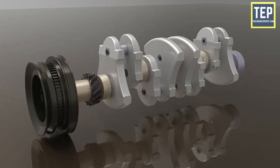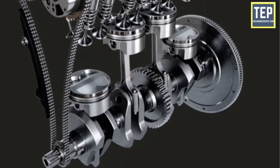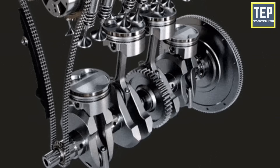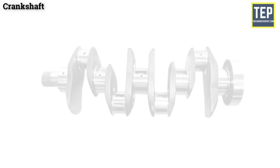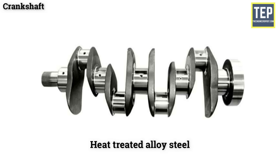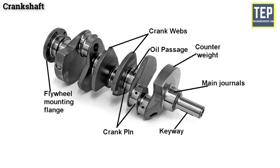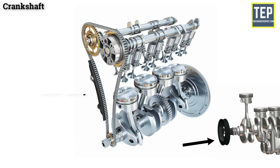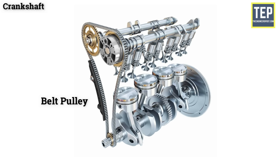The crankshaft is the engine component from which power is taken — the first part of the power transmission system, converting reciprocating motion of the piston into rotating motion via the connecting rod. Made of casting or forging of heat treated alloy steel, it consists of crank pins, webs, balancing weights, main journals, and oil holes. The front end carries a gear that drives the camshaft, a vibration damper to control torsional vibration, and a fan belt pulley that drives the engine fan, water pump and generator. The rear end carries the flywheel, which tends to keep the crankshaft running at constant speed.